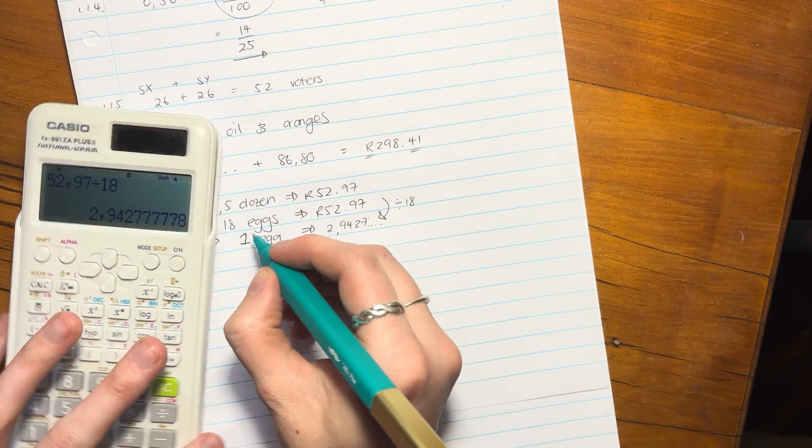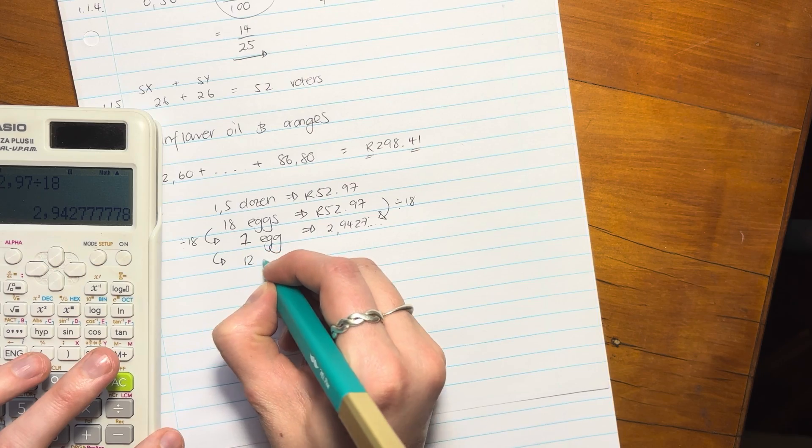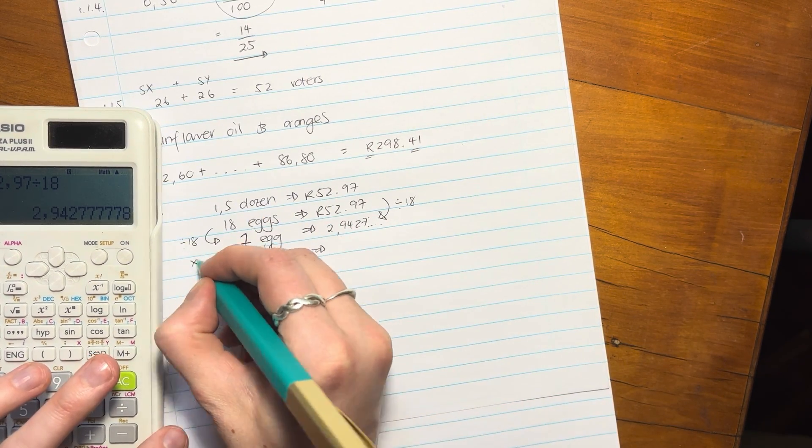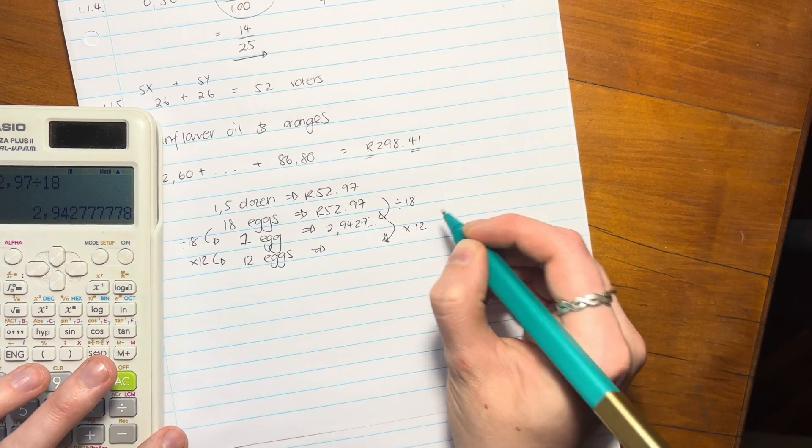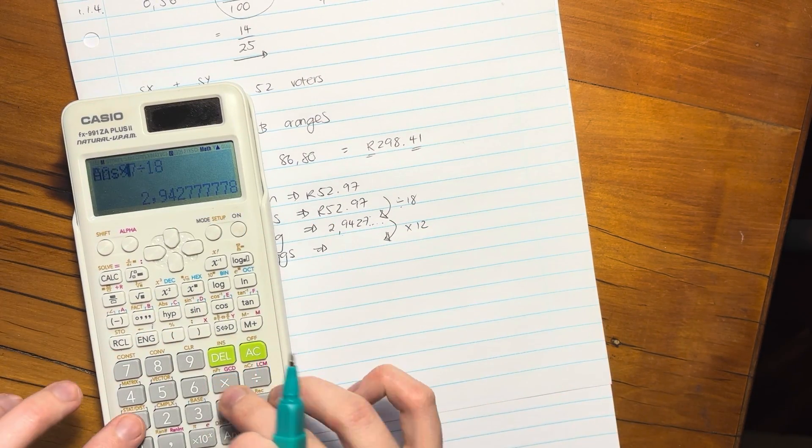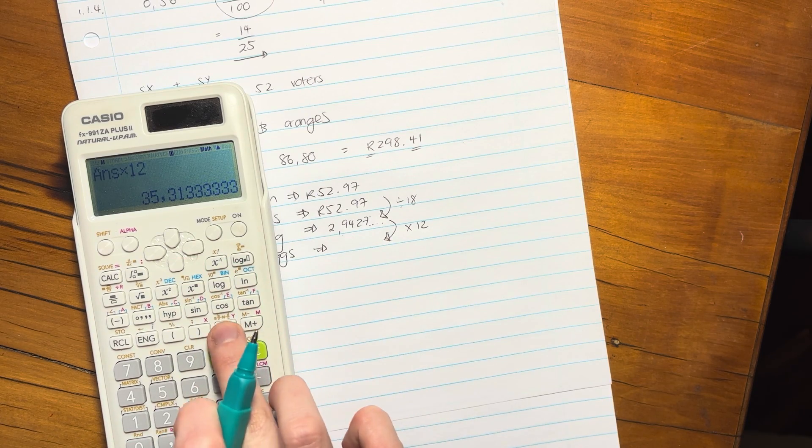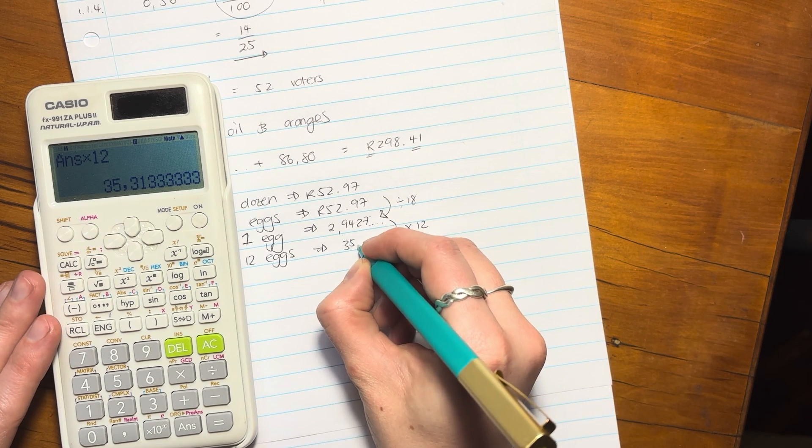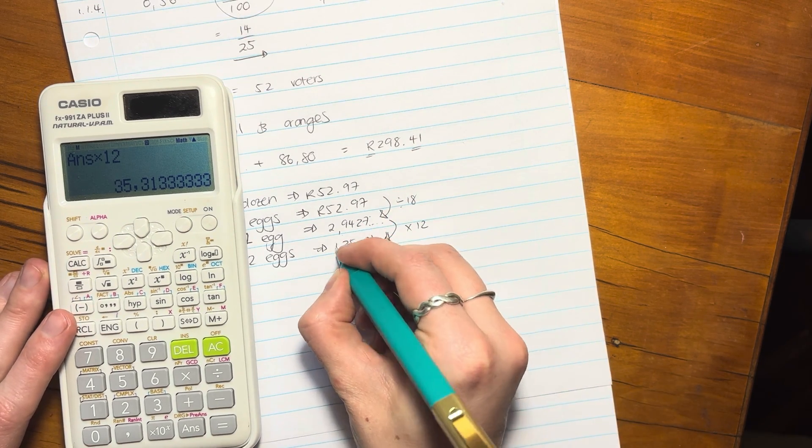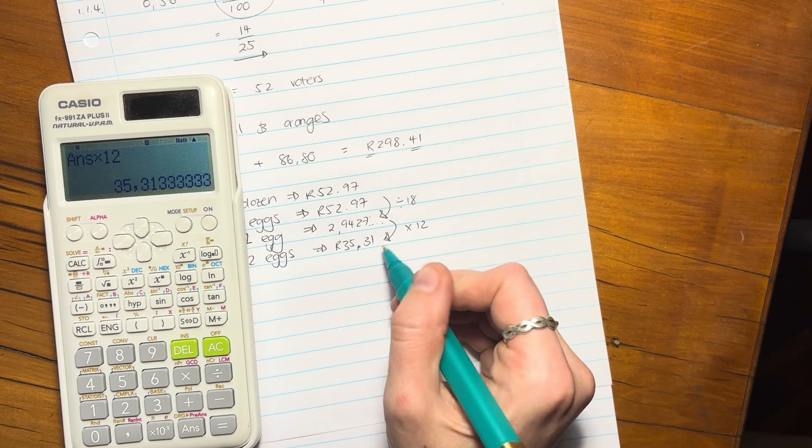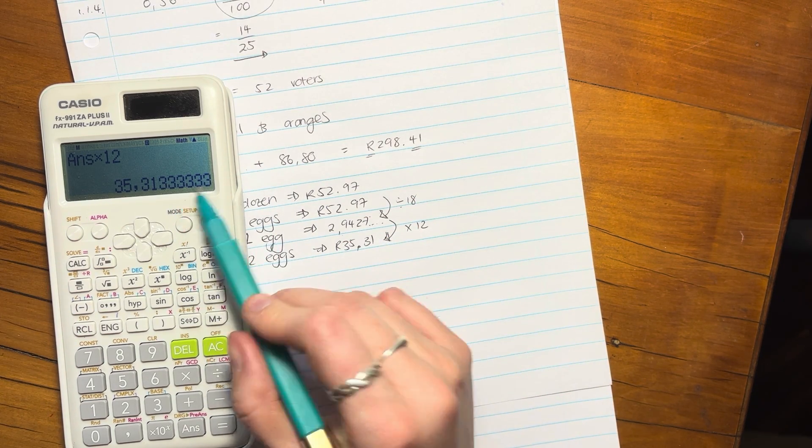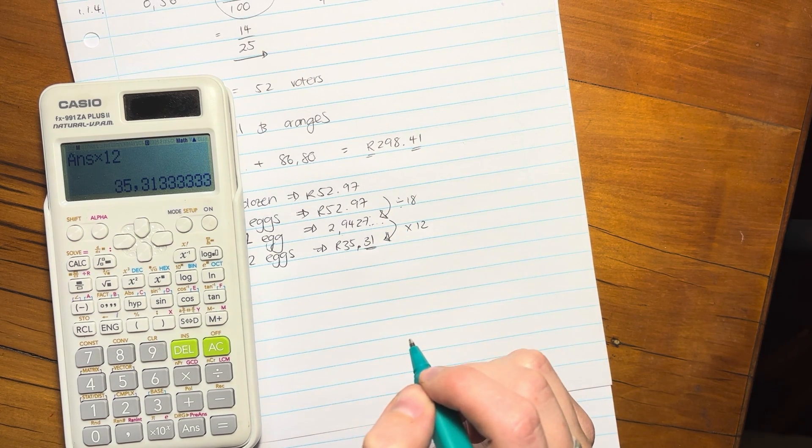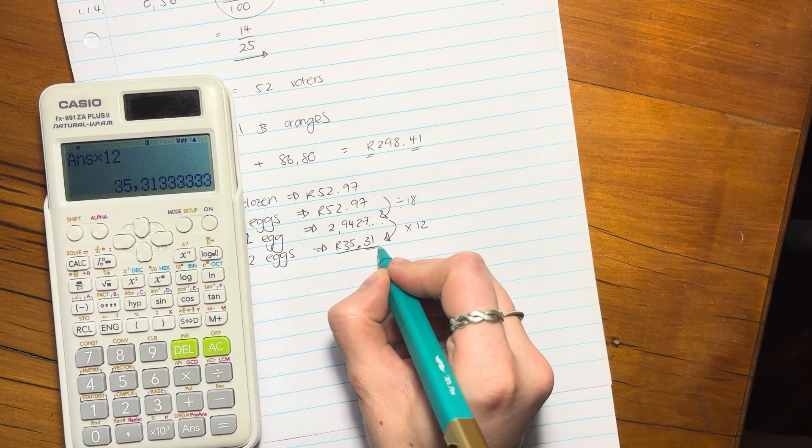But now we want to know what 12 eggs cost. So we times here by 12, and what we do to the one side, we have to do to the other side. So times it by 12. Take what's in there, times it by 12. Remember this beautiful little key. And it is 35.31. Now remember you have to round it off to two decimal places, even though there's way more decimal places here, because when it comes to money, you don't get more than two decimal places with cents. So you have to round it off, and there is your final answer.